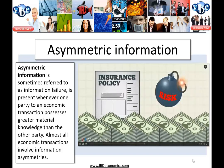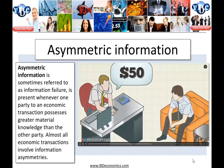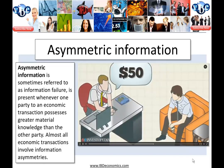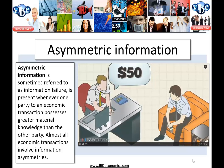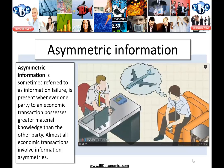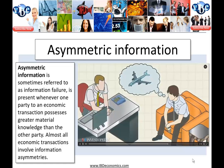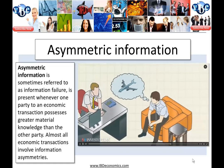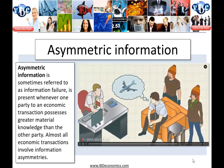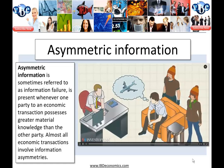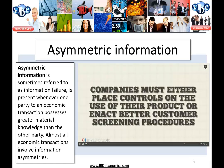For instance, ABC Insurance Corporation quoted Jim a $50 per month premium for term life insurance. If ABC failed to ask and Jim failed to disclose that he is an avid skydiver, then ABC is taking on more risk than they bargained for. More thrill seekers will purchase insurance, making the business unprofitable. To prevent adverse selection, companies must place controls on use or enact better customer screening.